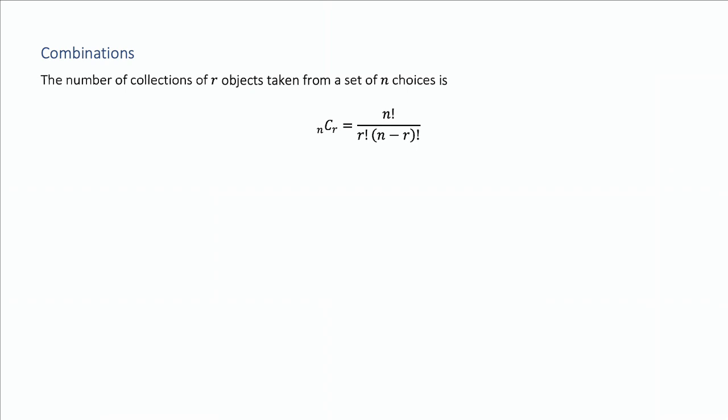Let's look at some examples. In how many ways can three letters be chosen from the letters A, B, C, D, and E? So we have five options here. So we're going to have five, and we're choosing three letters. So five choose three.